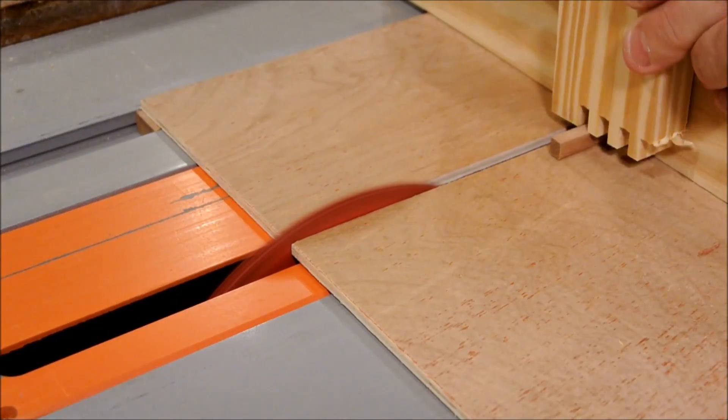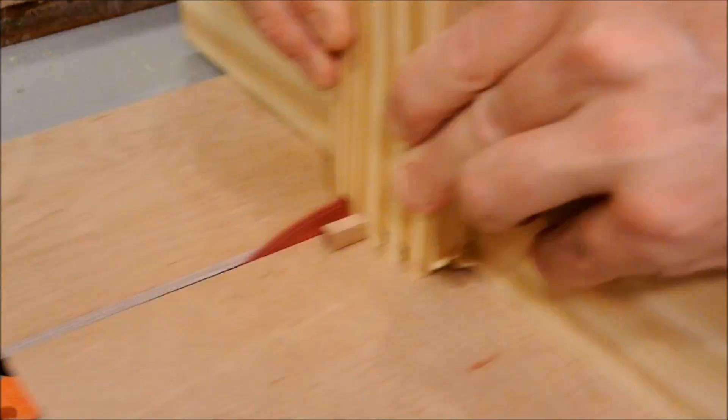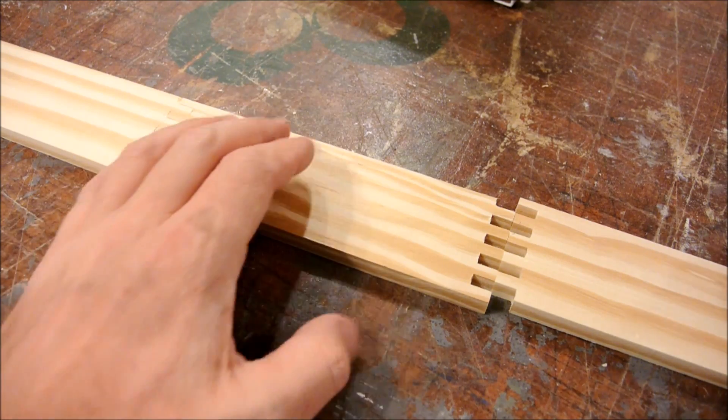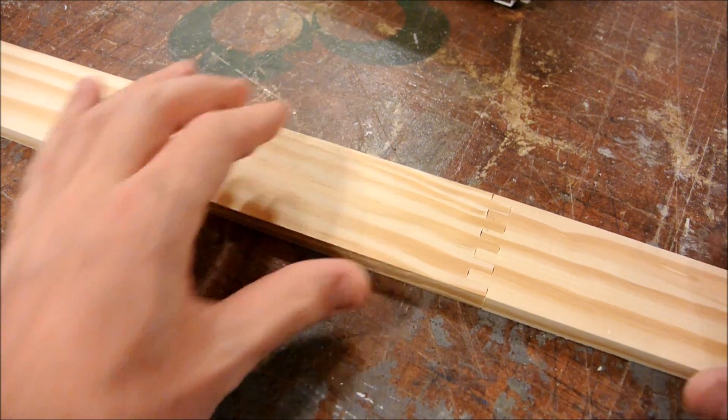In case you didn't realize it yet, the number 3 represents the number of blades that I'm using. A blade can be added or subtracted to vary the thickness of the box joints.